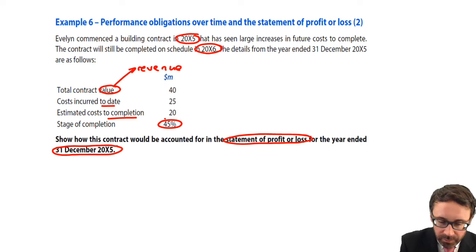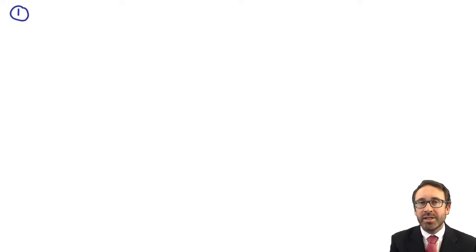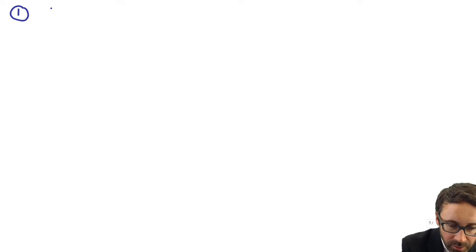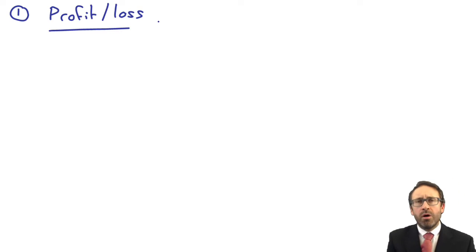So, what I'd like you to go through and do, just so that you're not listening to me incessantly, first of all, go through and do what we did on the previous example. I'd like you to go through there and work out the total profit or loss on this contract. Have a go. See how you get on. Stop the video and then you can start it again once you've worked it through.